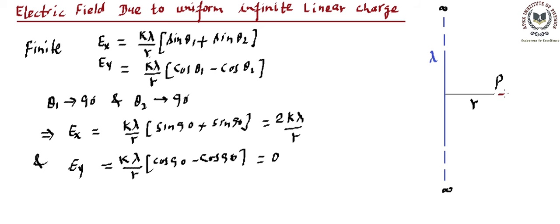So at point P the field will be only in the perpendicular direction if the charge is positive, and this field E equals Ex, which we have calculated as 2k lambda upon r. Due to an infinite linear uniform charge, the field at any point r from the charge is radially outward and equals 2k lambda upon r. In vector form, E vector equals 2k times (1 / 4π epsilon 0) times lambda divided by r.